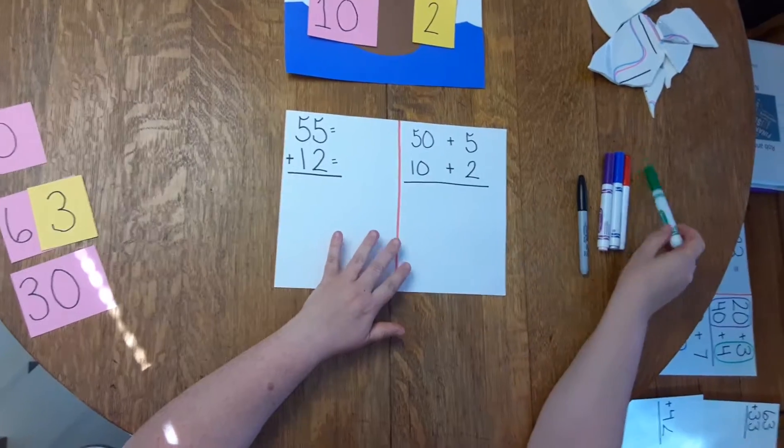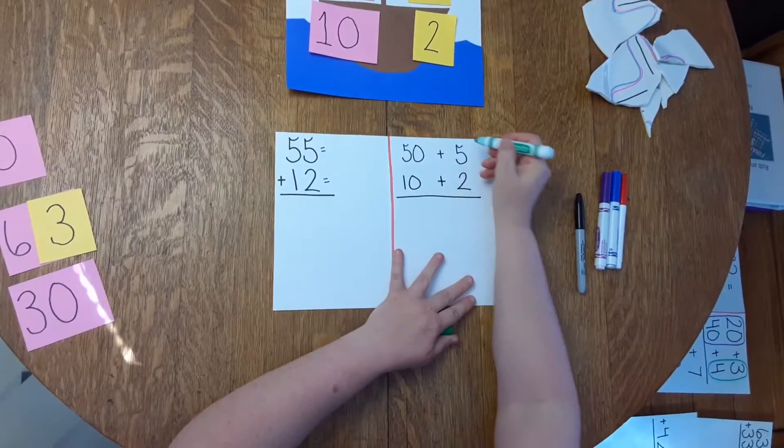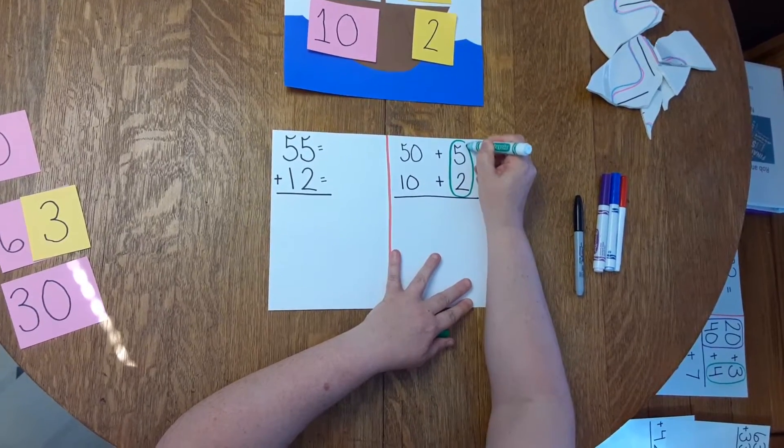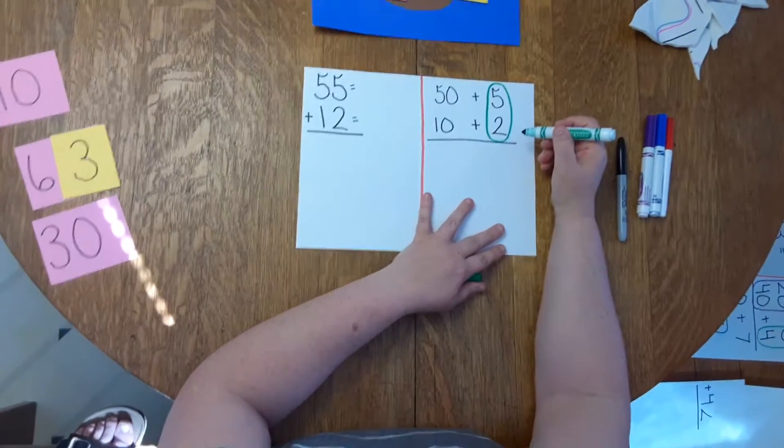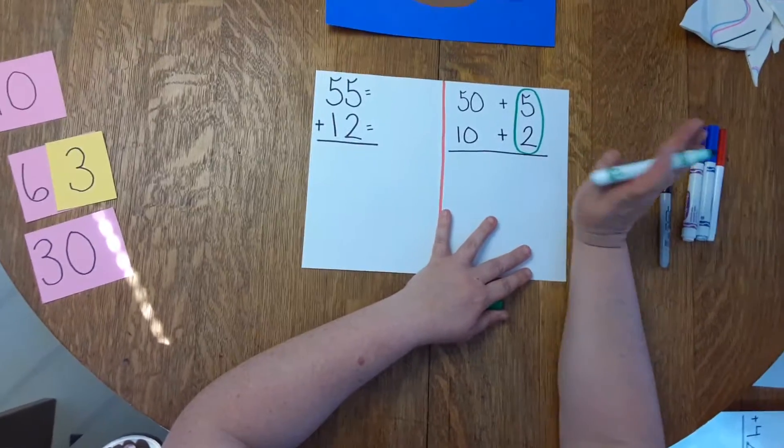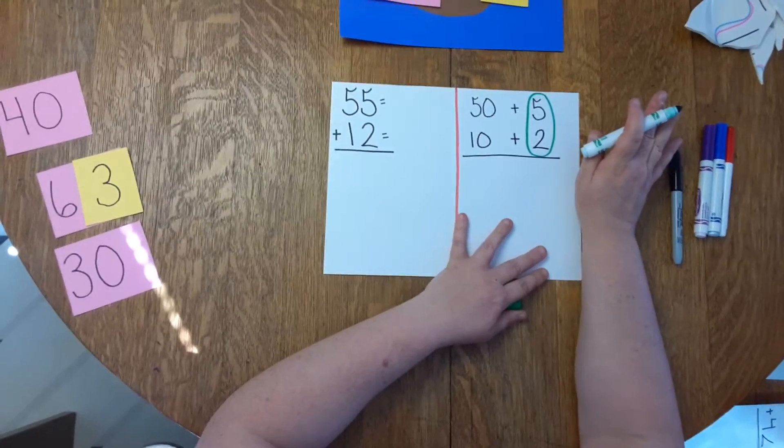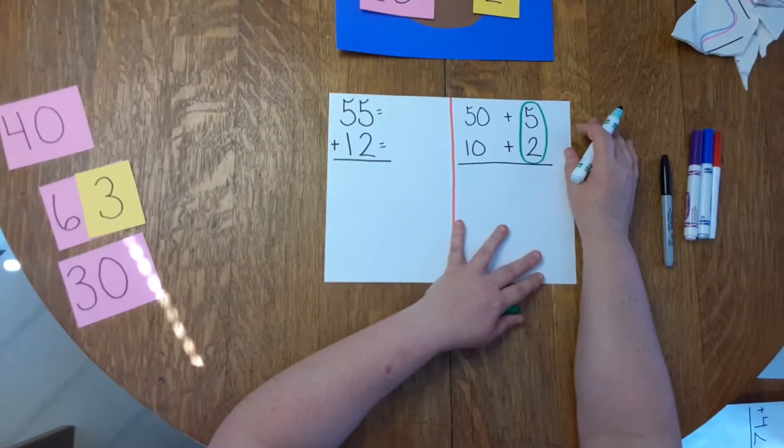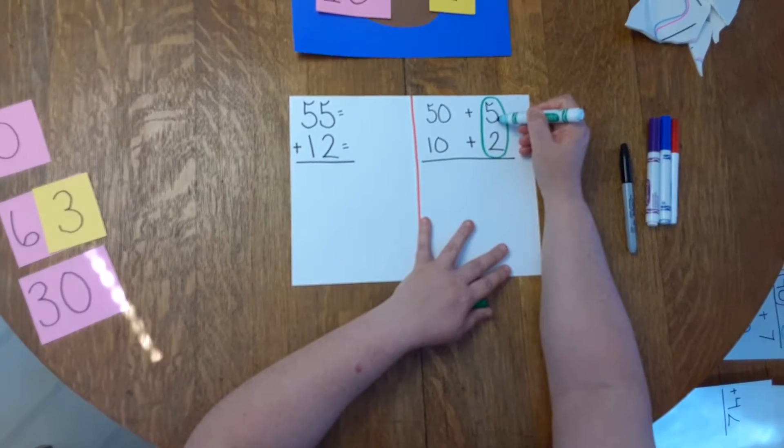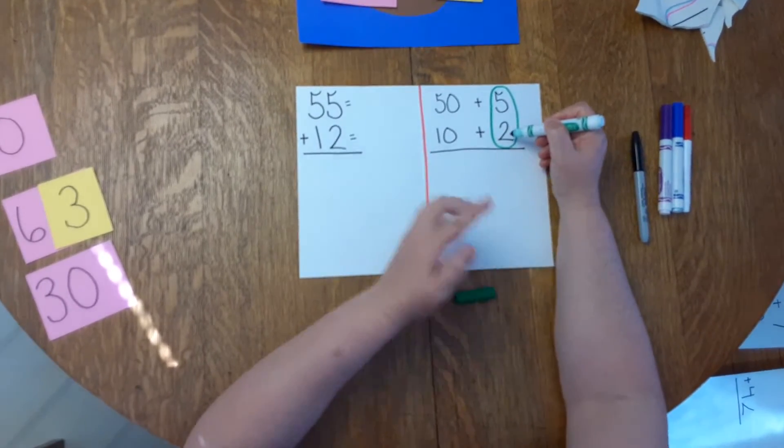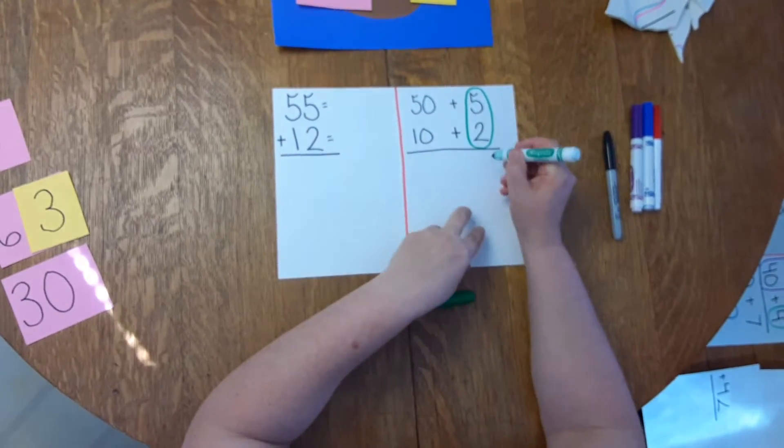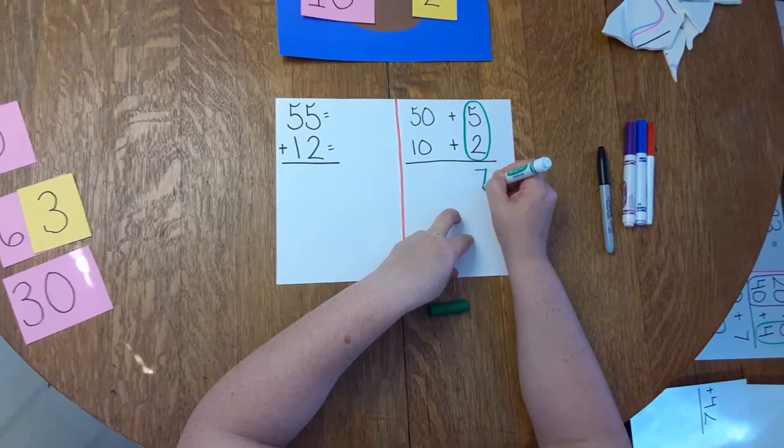Then what I'm going to do is I am going to add the ones together. Now I like to circle the ones in a different color. You can use a crayon, you can use a marker, or a highlighter. Or if you just want to use a pencil, that's fine too. But if I put 5 in my head, and I add 2. So 5, 6, 7. And I write down the 7.